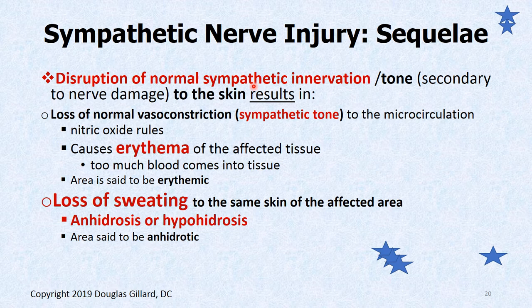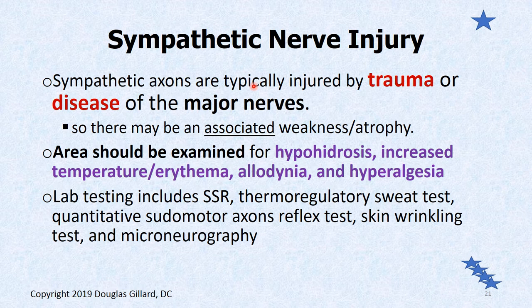Sympathetic nerve injury — if you get disruption of the sympathetics, we know sympathetics are responsible for vasoconstriction. If you lose your sympathetics, nitric oxide rules and you become erythemic. The other thing with sympathetic nerve injury is a loss of sweating — anhidrosis or hypohidrosis. No sweating or decreased sweating. That has to be tested by a neurologist.